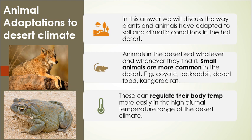Animals in the hot desert eat whatever and whenever they can find it. There isn't an abundance of plants for them to eat, so they have to eat whatever they can. Animals can eat almost anything, and they can also go a long time without eating.